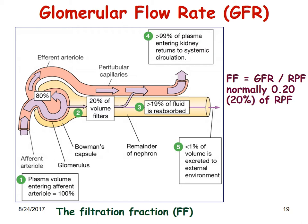Of the blood flowing towards the glomerulus, only 20% is filtered. Of this filtrate, 19% of the fluid is going to be reabsorbed and less than 1% is excreted into the external environment as urine. The afferent arteriole is larger in diameter compared to the efferent arteriole, which is smaller. The filtration fraction is GFR divided by the renal plasma flow, and is normally around 0.2, or 20% of the renal plasma flow.